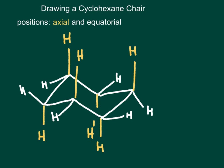So you can see that they're alternating carbons. The other six hydrogens drawn in white are described as the equatorial hydrogens. These are ones that are either slightly down or slightly up, and they're described as equatorial because they go around the equator of the ring.